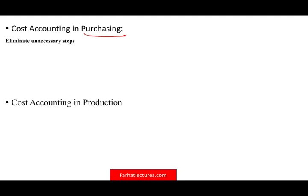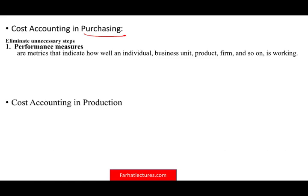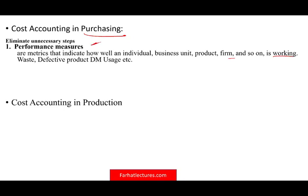In purchasing, you have to use performance measures to know how well your purchasing is going. Performance measures are metrics that indicate how well an individual business unit or firm is working. You're buying supplies and material — so what is the waste? How many defective products are you having? What's the direct material usage? One way to determine purchasing efficiency is to monitor the process through performance measures.